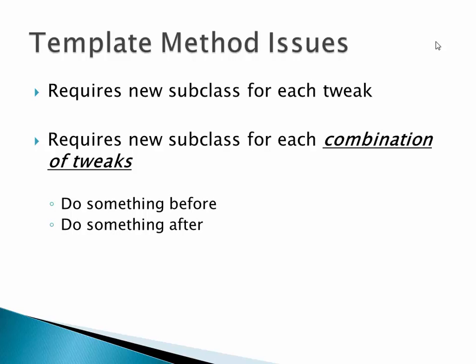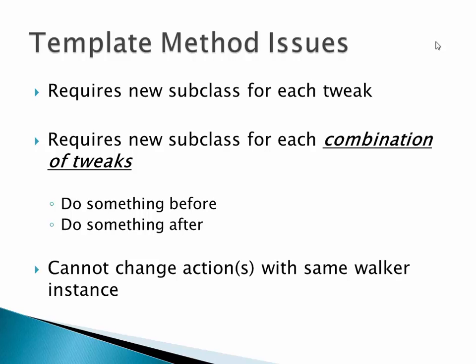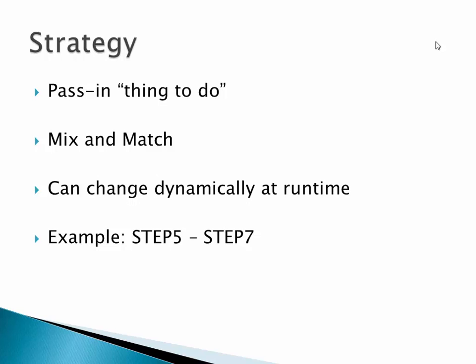Maybe we want to add two more methods: do something before any traversal and do something after — like locking, starting a transaction, or logging. The other problem is you cannot change what actions are happening with the same walker — once you make that walker instance, you're locked into it; you can't change it at runtime. So we come up with a smarter way by going to the strategy pattern. Instead of subclassing to override, we take that functionality, lock it up in a little object by itself, and pass it in. You can mix and match any combination and change them dynamically at runtime.